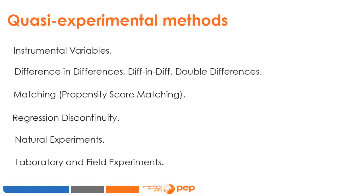The diff-and-diff method cancels out any selection bias caused by observed or unobserved characteristics intrinsic to the individual or the environment, but that do not change before and after the treatment. Matching is another non-experimental approach that uses large datasets and statistical techniques to construct an artificial comparison group not subject to selection bias. The propensity score matching is probably the most popular, constructing an artificial comparison group with similar probabilities of receiving the program. There is also the regression discontinuity method — an econometric technique that came back to a second life about 15 years ago.